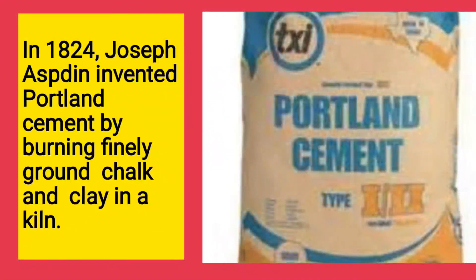In 1824, Joseph Aspdin invented Portland cement by burning finely ground chalk and clay in a kiln.